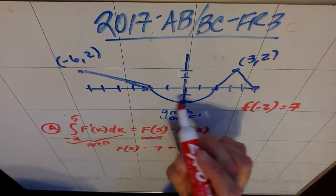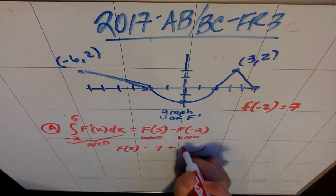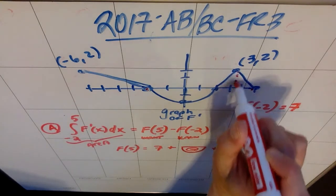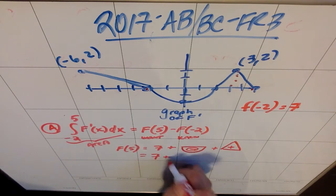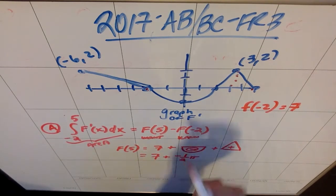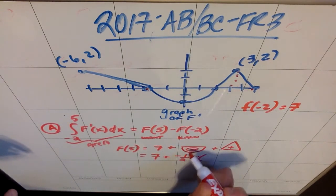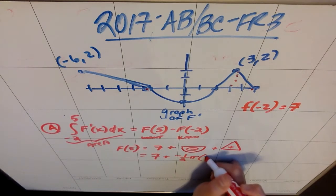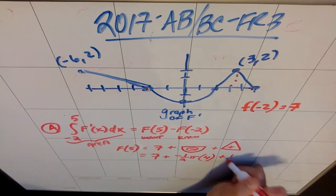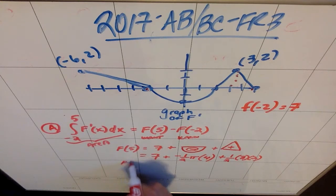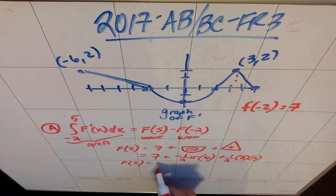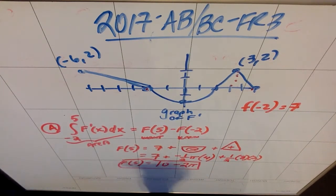Area below the axis will be negative, so we get a negative semicircle, plus a triangle that has a height of two and a base of three. So f of five equals seven, minus one half times pi times two squared — that's negative two pi — plus one half times base three times height two, which gives positive three. So f of five equals seven plus three minus two pi, which is ten minus two pi.